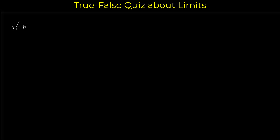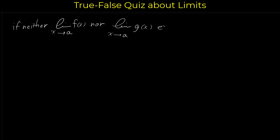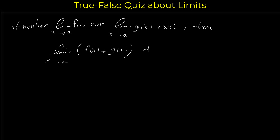In this video we want to do some true/false questions about limits of functions. The first statement is: if neither the limit of f(x) as x approaches a nor the limit of g(x) as x approaches a exists, then the limit of f(x) + g(x) as x approaches a does not exist. We want to figure out if this statement is true or false.